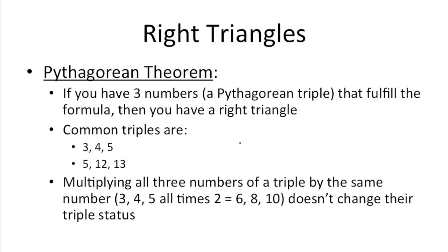So when you have three numbers that work in the Pythagorean formula, you have a Pythagorean triple. And you can be pretty sure that when you have a Pythagorean triple, that you have the sides of a right triangle. So common triples that you should probably know are 3, 4, 5, and 5, 12, and 13.